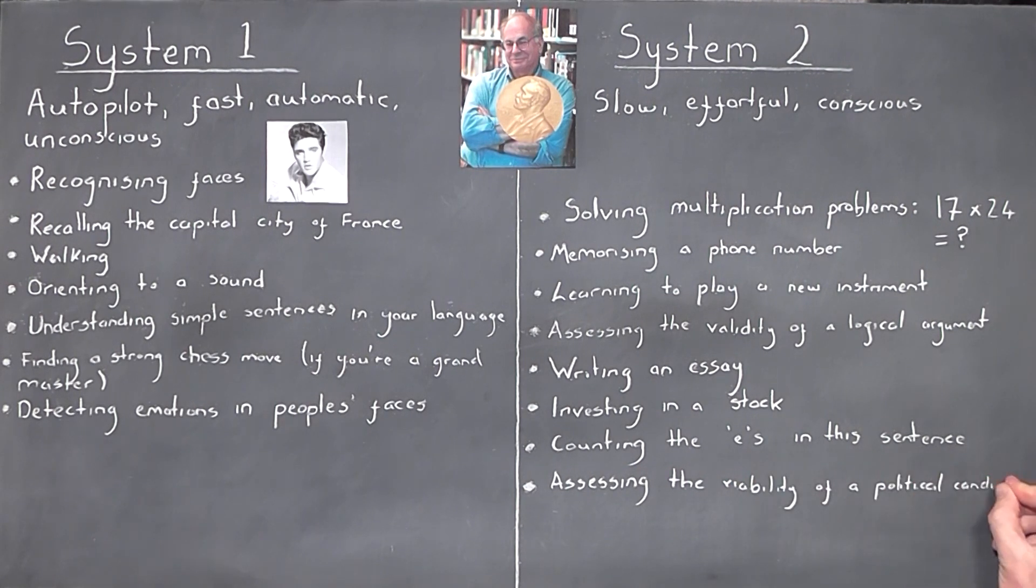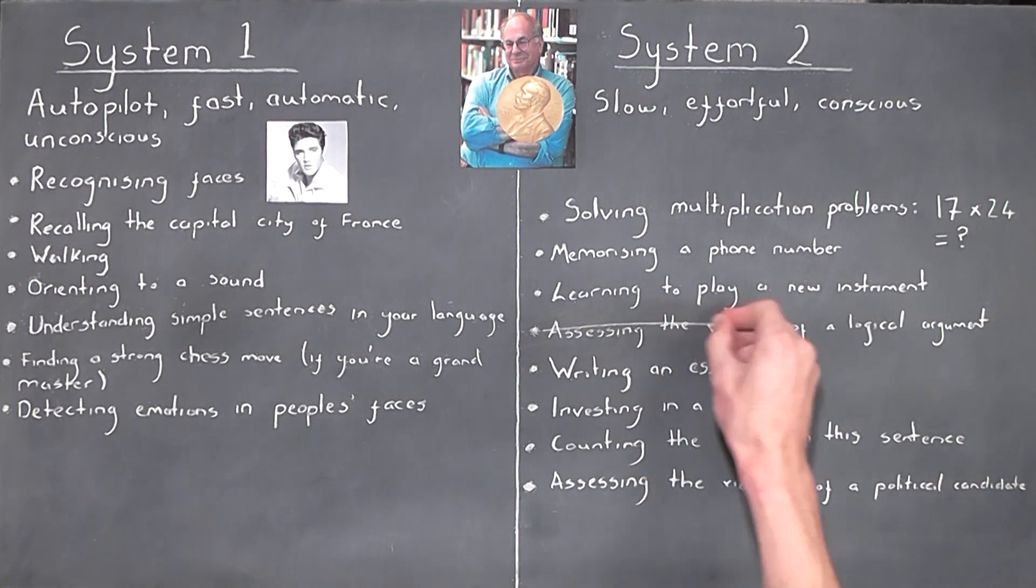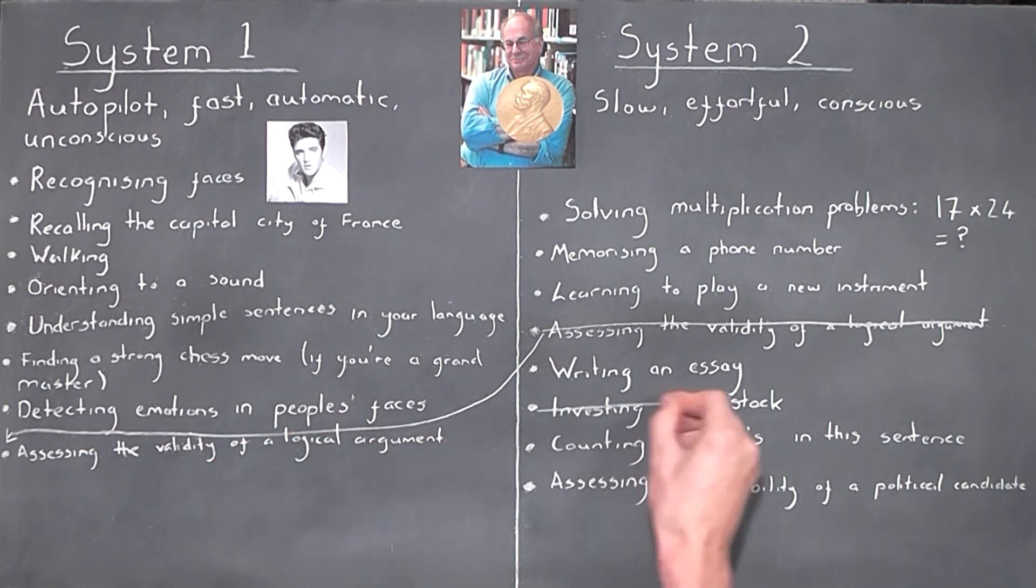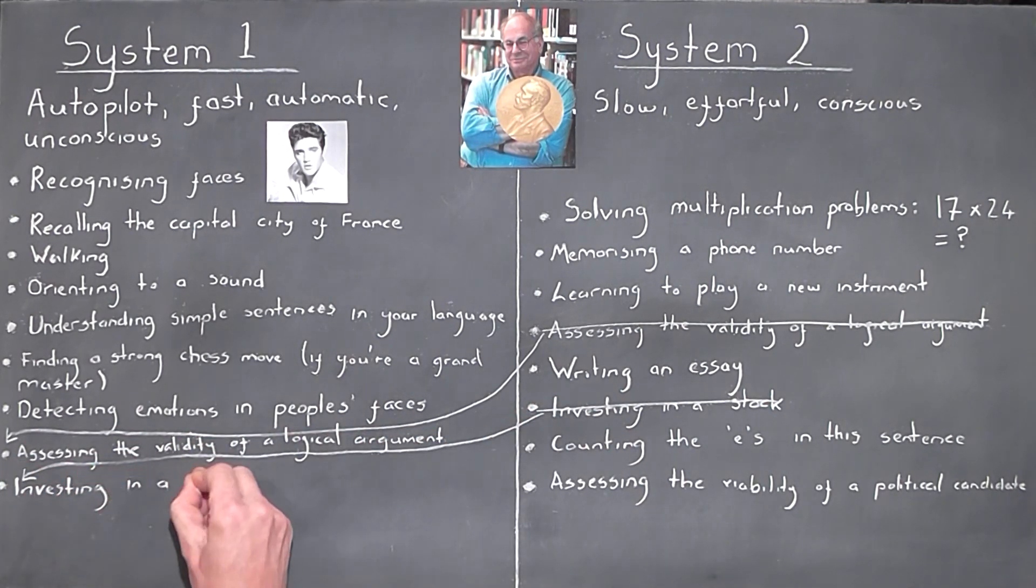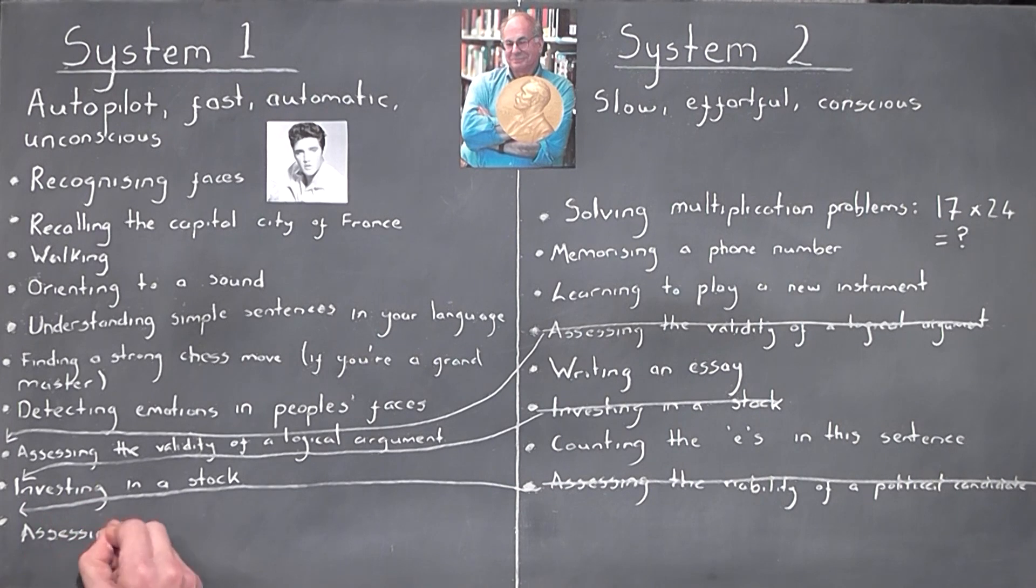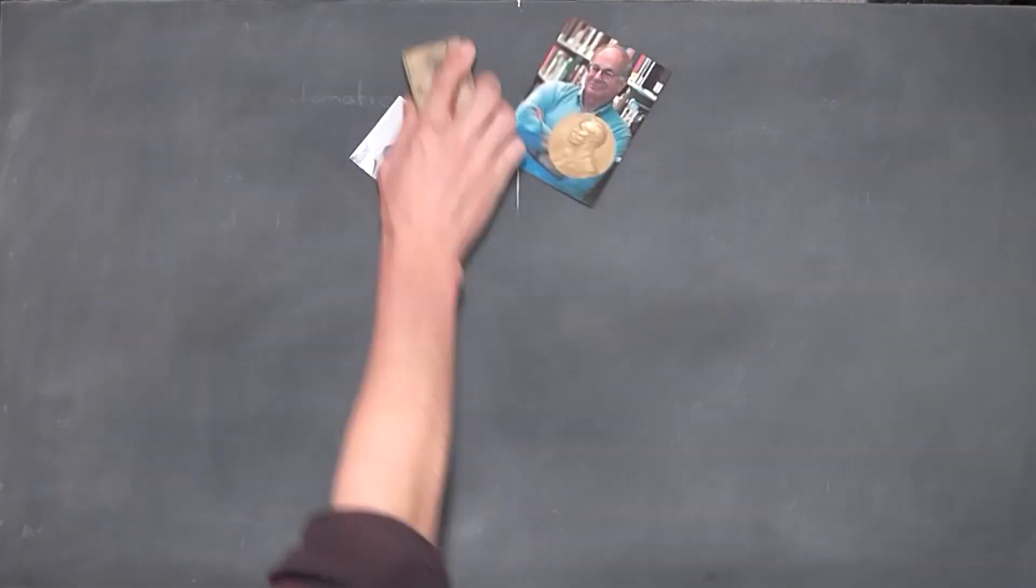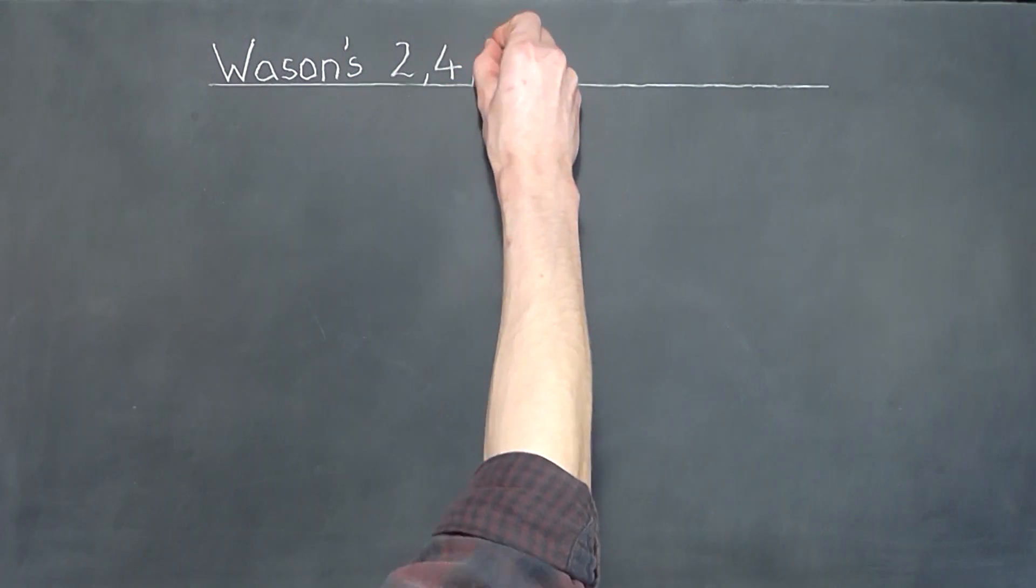Throughout the book, Kahneman gives example after example demonstrating a worrying result. We default to using System 1 in many situations which really should require us using System 2. Two shortcomings Kahneman discusses are the well-known confirmation bias fallacy, and what he calls the what-you-see-is-all-there-is fallacy, both of which are illustrated in Peter Wasson's 246 experiment.